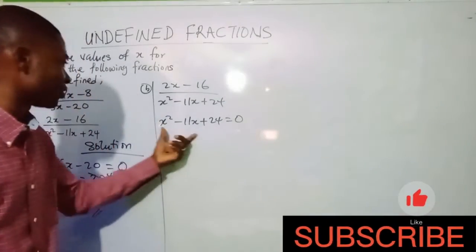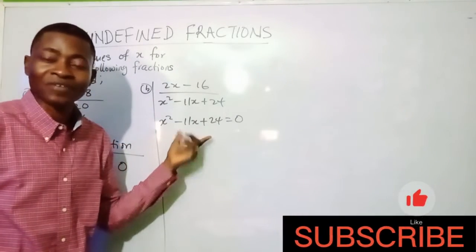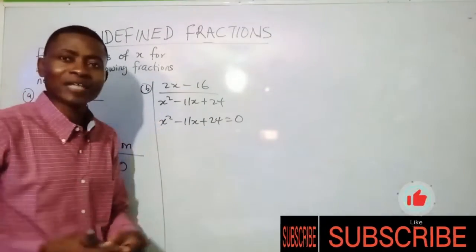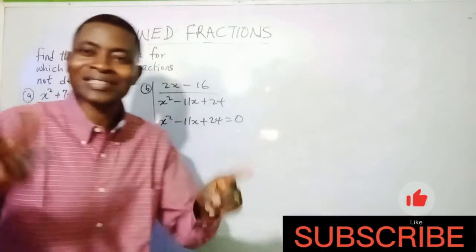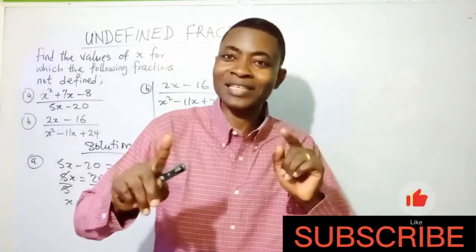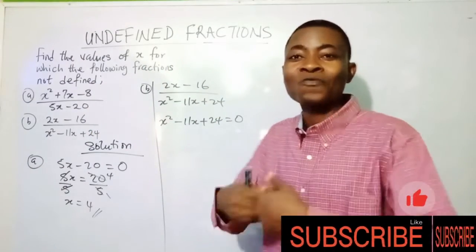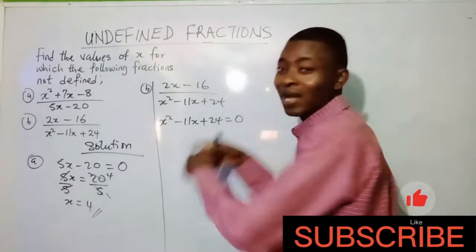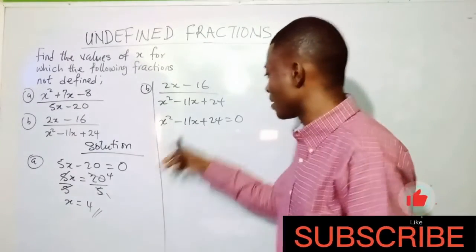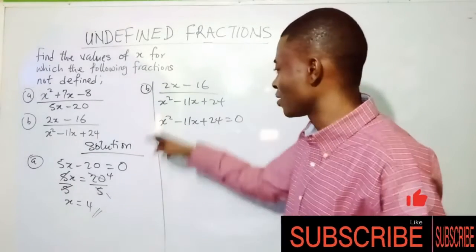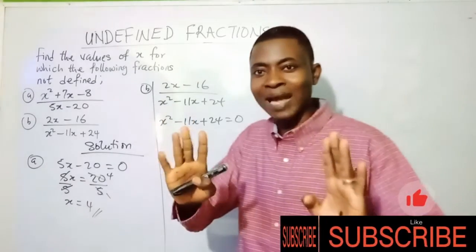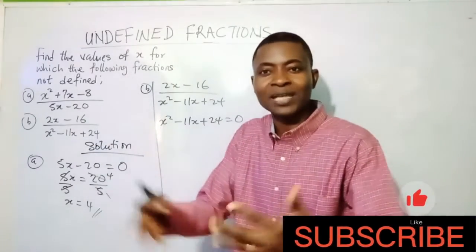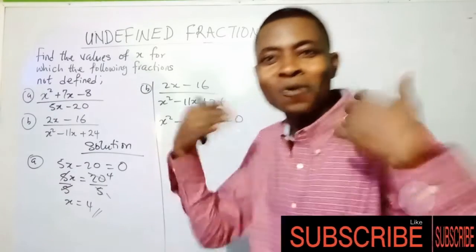You can see that this is a quadratic equation, so we'll use the factorization method. When using factorization, we ask two questions: what two numbers will multiply together to give 24, and when added or subtracted give minus 11? This applies especially when the coefficient of x squared is 1, so we go straight to finding those two numbers.